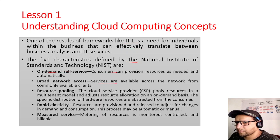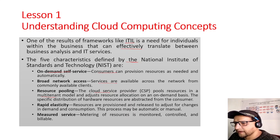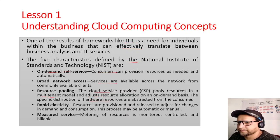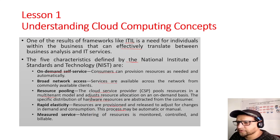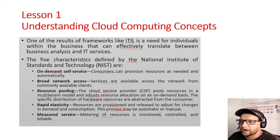Third is resource pooling — the CSP pools resources in a multi-tenant model, meaning it may be shared with multiple organizations, and adjusts resource allocation on-demand. The specific distribution of hardware resources is abstracted from the consumer. Fourth is rapid velocity — resources are provisioned and released to adjust for changes in demand, either automatically or manually. Fifth is measured services — metering of resources is monitored and controlled.